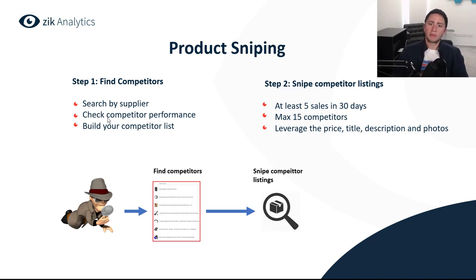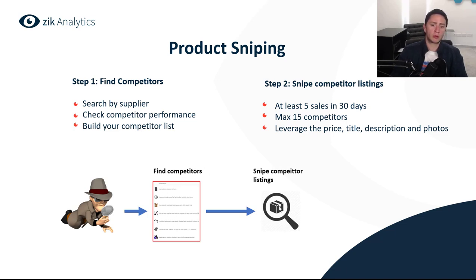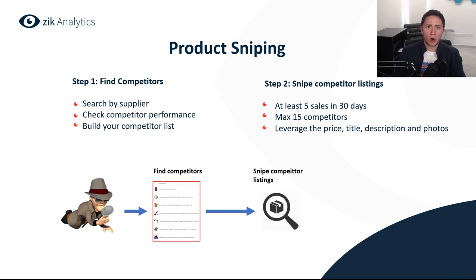So this is how simple it is. You can see the flow: you find competitors, look for selling opportunities, then snipe your competitor's listings. Very simple, a very easy process — you just have to make sure you cover the small details. I'll share my screen now and give a short live explanation of product sniping before we move to the similar products research method.